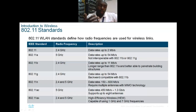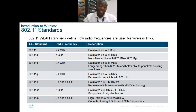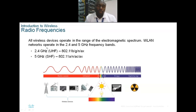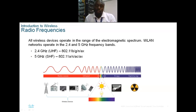The concept of these frequencies is that the higher the frequency, the shorter the distance but the higher the bandwidth capacity. All wireless devices operate in the electromagnetic spectrum. Wireless LAN operates between 2.4 GHz and 5 GHz. The 2.4 GHz band runs b, g, and n standards, while 5 GHz runs a, n, ac, and ax. When buying or setting up a wireless device, check the standards it supports.